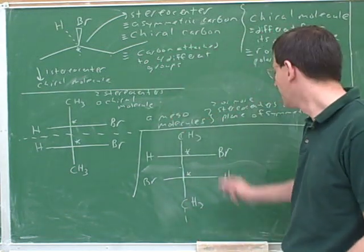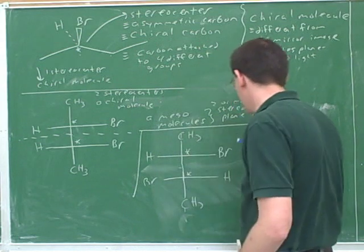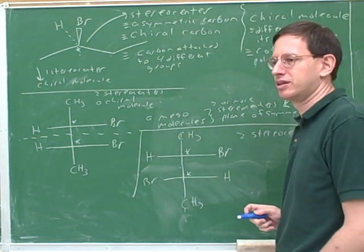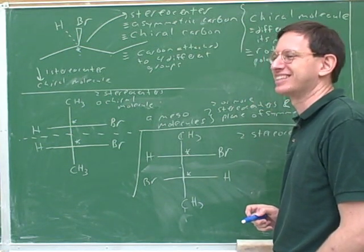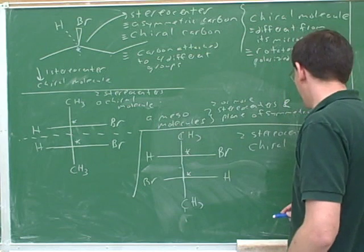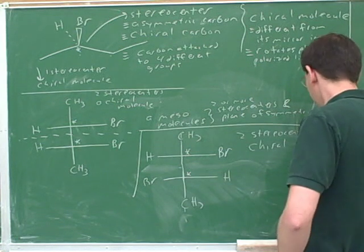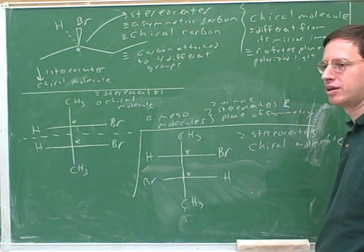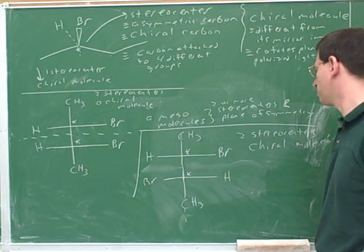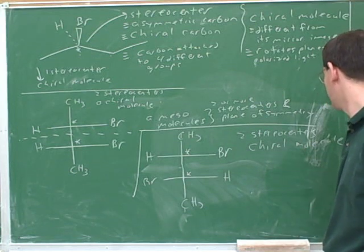Is this a plane of symmetry? No — because when bromine looks in the mirror it should see another bromine, not a hydrogen. So there are no planes of symmetry here. There are two stereocenters, and it is a chiral molecule. Is this molecule meso? No — it's got half of the definition, but the fact that it wasn't meso is what tells us it is a chiral molecule. Meso would require a plane of symmetry.